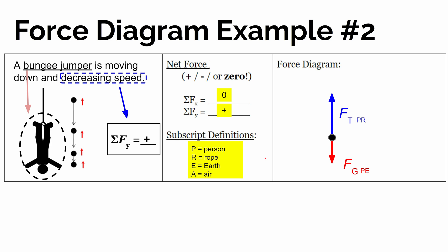Which direction would the air be pushing on the person? Well, it's always a resistive effect. So if you're moving forward, the air is pushing backwards. Or in this case, if the bungee jumper is moving down, the air will be pushing back in the upward direction.